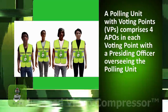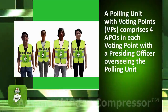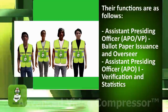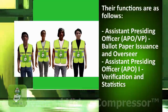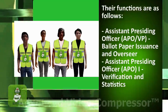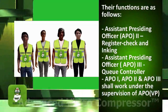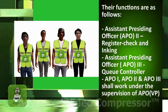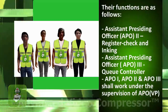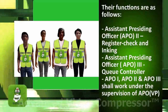A polling unit with voting points (VPs) comprises four APOs in each voting point, with a presiding officer overseeing the polling unit. Their functions are: APO (VP) for ballot paper issuance and oversight; APO1 for verification and statistics; APO2 for register check and inking; APO3 as cue controller. APO1, APO2, and APO3 shall work under the supervision of the APO VP.